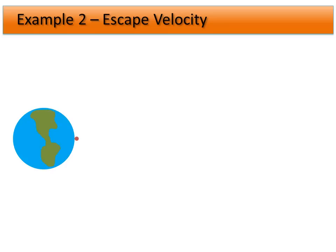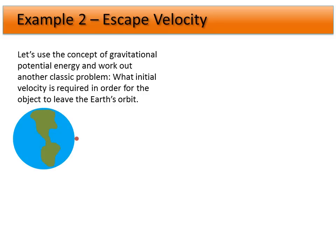To get off the Earth's surface and travel to some point in space where the Earth is no longer affecting it. We call this escape velocity, or the velocity that the object needs to escape from a planet or from the Earth's orbit.